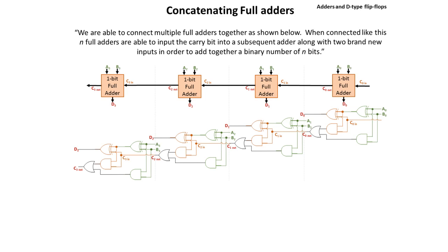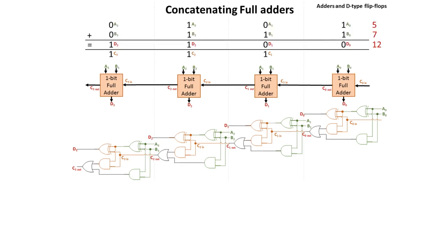Let's work through an example because this can be quite tricky to get your head around at first. Here we have some basic binary — ignore the annotations for now. So we've got the number 5, which is a 1 in the 1 column and a 1 in the 4 column, and the number 7, which is a 1 in the 1 column, a 1 in the 2 column, and a 1 in the 4 column. The answer is 12, which is a 1 in the 4 column and a 1 in the 8 column. Here you can see we've performed the binary addition.